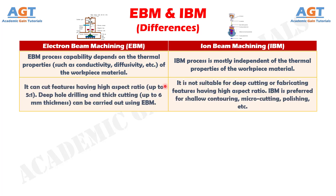Number 10. Electron Beam Machining can cut features having high aspect ratio, up to 5 is to 1. Deep hole drilling and thick cutting, up to 6 mm thickness, can be carried out using Electron Beam Machining, whereas Iron Beam Machining is not suitable for deep cutting or fabricating features having high aspect ratio. Iron Beam Machining is preferred for shallow contouring, micro cutting, polishing, etc.